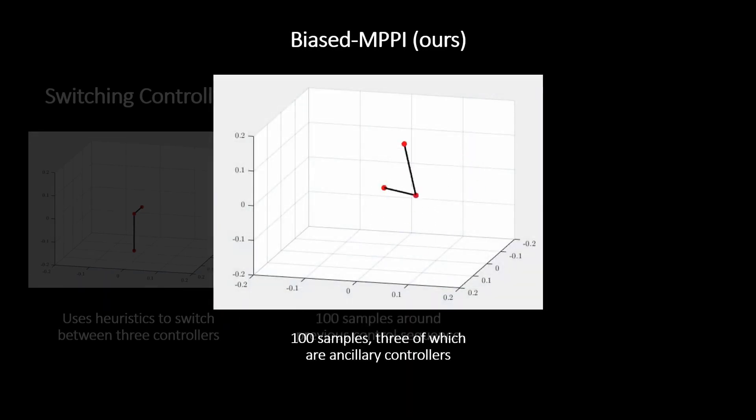Our proposed biased MPPI works the same way as classical MPPI, but allows for an arbitrary sampling distribution. Therefore, out of the 100 samples taken, three are suggestions from auxiliary controllers used by the switching controller. Biased MPPI can take these suggestions and modify them to better minimize its cost. Thus, it immediately brings the arm next to the desired reference, efficiently swings up the pendulum, and achieves perfect stabilization.